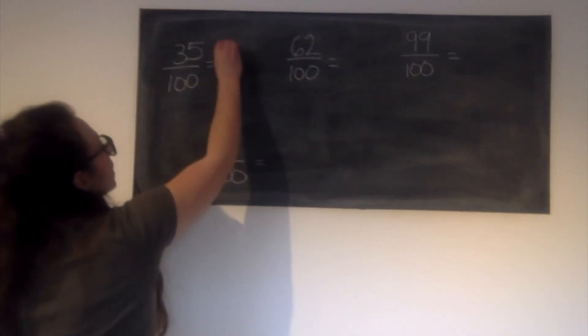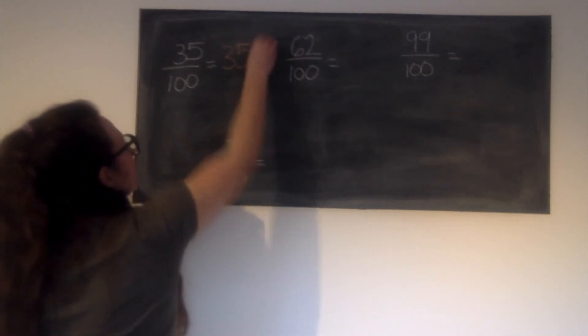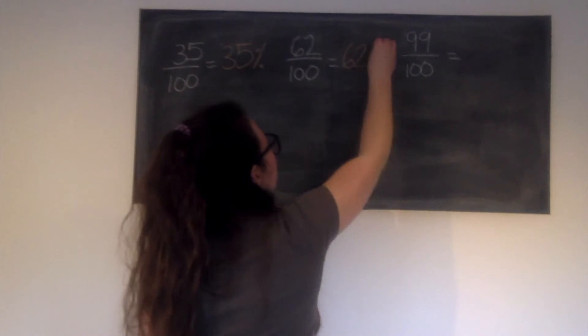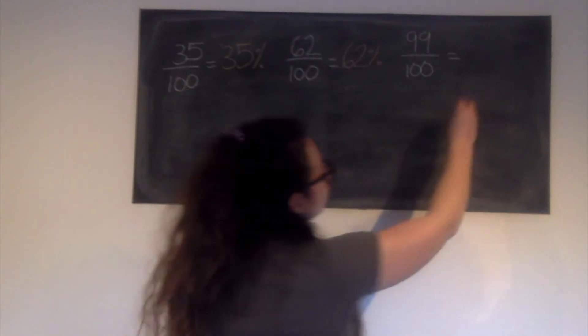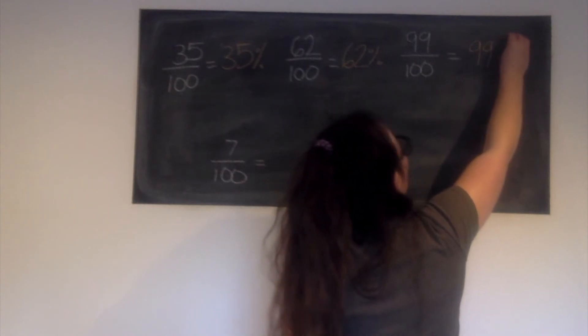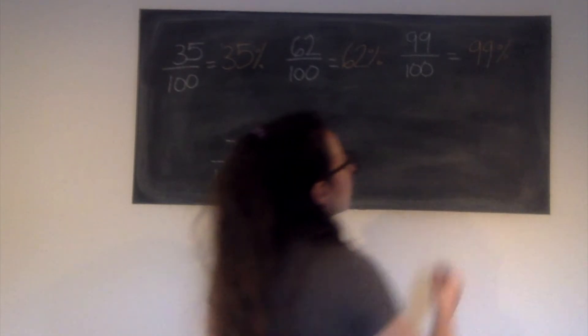So 35 hundredths is 35%, 62 hundredths is the same as 62%, 99 hundredths is 99%, so that's only one hundredth away from being full, complete.